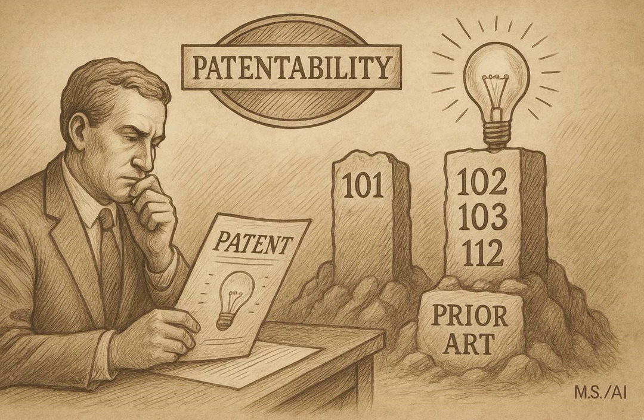That means we'll cover what kinds of things can be patented — subject matter eligibility under 101 — plus utility: is it useful? Novelty: is it actually new? Non-obviousness: is it more than just a trivial step forward? And finally, Section 112: how well do you have to actually describe your invention?